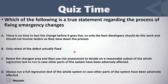'Only retest the defect actually fixed' — here we perform only confirmation testing but no regression testing, so this is wrong. 'Retest the changed area and then use risk assessment to decide on a reasonable subset of the whole regression test to run in case other parts of the system have been adversely affected' — this is correct. We retest this part and perform risk assessment to decide the scope of regression testing. 'Always run a full regression test of the whole system' is a good solution but most of the time we don't have time for this during emergencies, which is why we use risk assessment to decide a subset of regression tests to perform.